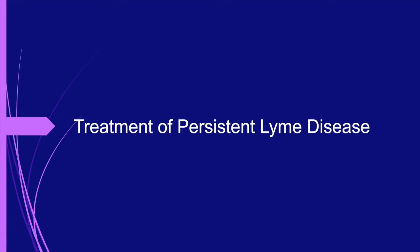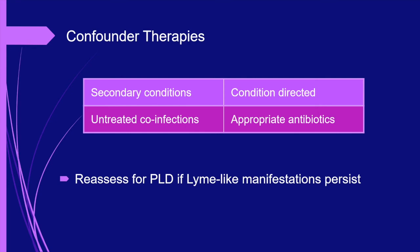Earlier in this presentation, I noted that there were several areas of uncertainty with regard to persistent Lyme disease—perhaps the greatest being how to treat patients with this illness. Treatment for confounding infections and conditions is relatively straightforward: patients with conditions secondary to or unrelated to Lyme disease should receive condition-directed therapies, and patients with untreated tick-transmitted infections should be treated with appropriate antibiotic regimens. In either situation, patients should be reassessed following therapeutic intervention to verify that their symptoms have responded to therapy. With regard to our discussion case, treatment for hypothyroidism normalized his thyroid studies but failed to resolve his symptoms—an example of persistent Lyme disease coexisting with an unrelated condition.